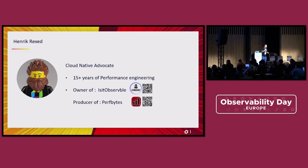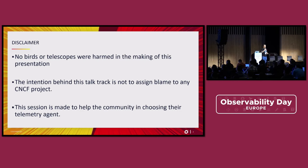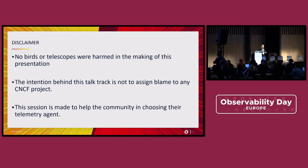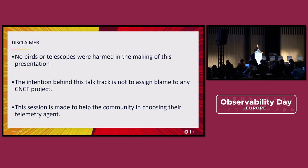All right, enough speaking about myself. Before we start, I have a small disclaimer. To prepare this talk, no birds or telescopes were harmed — I was really gentle with both of them. Second, this talk is not aimed to blame any projects at all. The idea is to give you some tips and numbers so it will be easier for you to pick and choose which agents to select. I love the Fluent community and the OpenTelemetry community — this is about helping both communities provide better agents and better support.